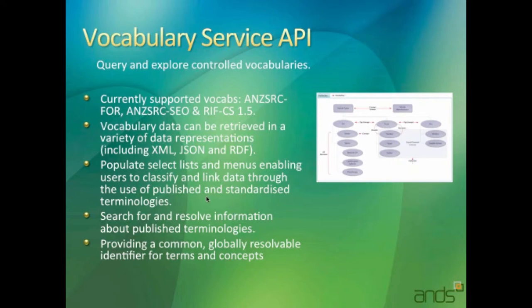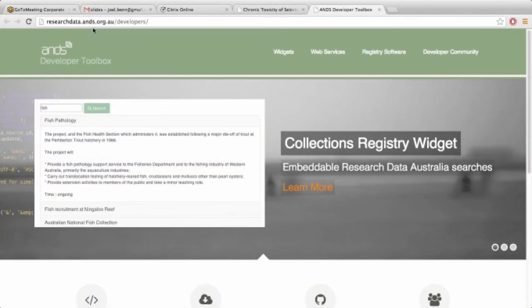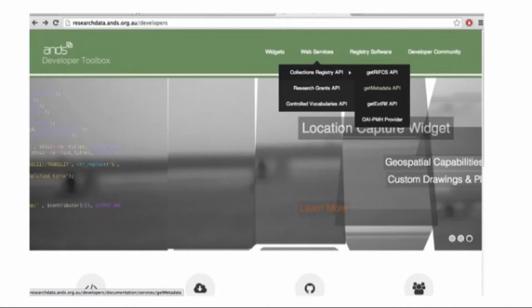The vocabularies that are published obviously have common and globally resolvable identifiers that resolve to a description of concepts. So going forward, as we get more and more vocabularies, people will be able to refer to them by these resolvable identifiers. The address is researchdataaustralia.ans.org.au/developers.